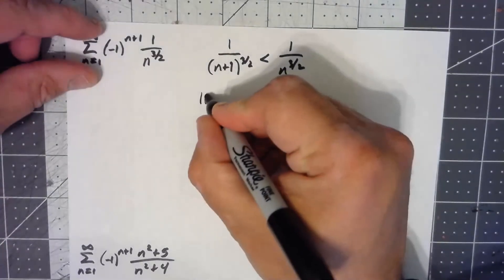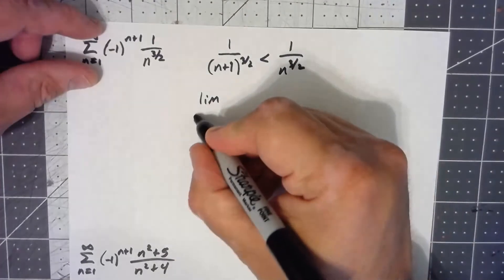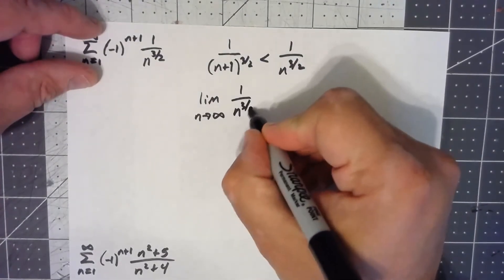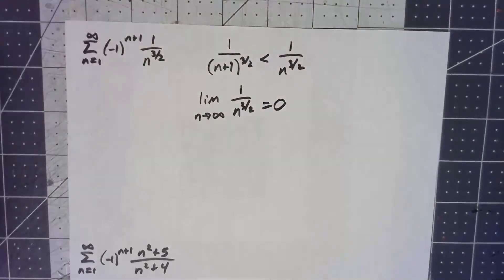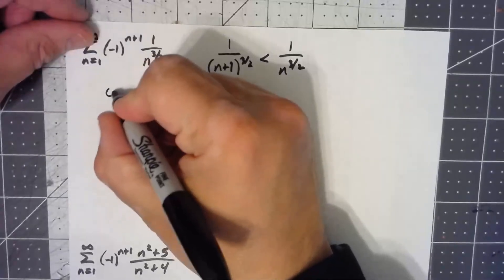And then if we take a look at the limit of just the positive part, as n goes to infinity of one over n to the three halves, that's zero. There we go. Automatically, we've got an alternating series. It's non-increasing. The limit of the individual terms is zero. Bam. This thing converges.